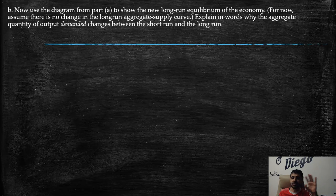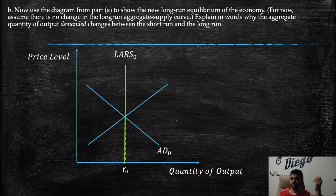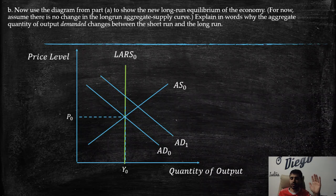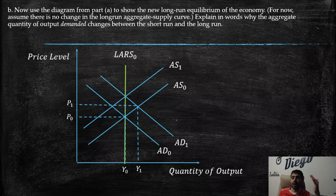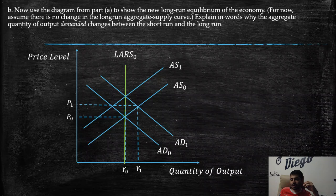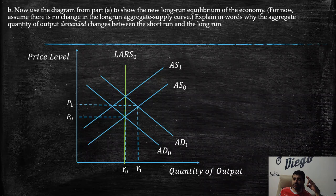Part b: Use the diagram from part a to show the new long-run equilibrium, assuming no change in the long-run aggregate supply curve. The aggregate demand shifts right due to increased investment. In the long run, workers can bargain for higher wages, making it more expensive for producers to operate at the same price level. Aggregate supply then shifts to the left, and at the end we return to exactly the same level of output — just at a higher price level.